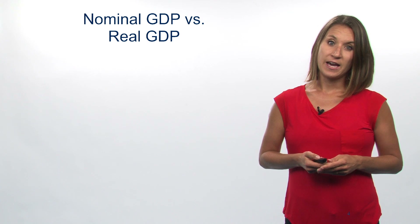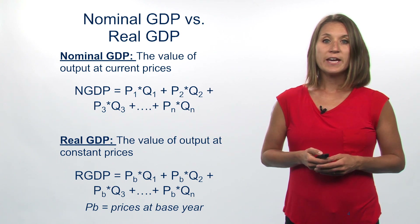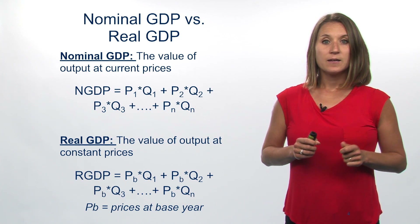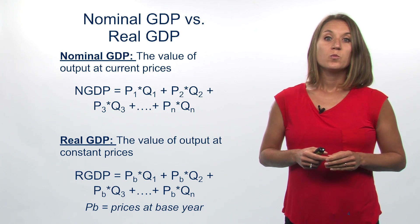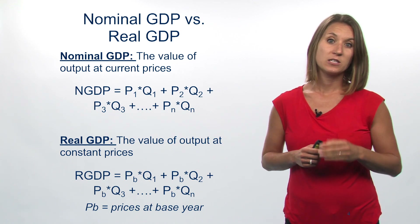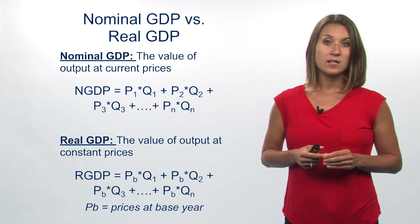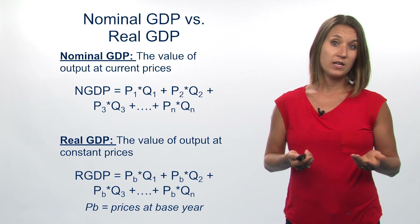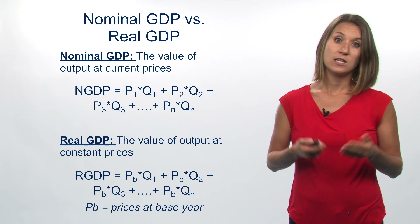There are two ways that we can calculate GDP: in nominal terms and in real terms. Nominal GDP calculates the market value of goods and services at current prices — taking that particular year's price and multiplying it by the quantity of that good produced in that year. Real GDP keeps the price constant based on a base year, controlling for changes in prices or inflation and only looking at the change in production each year.